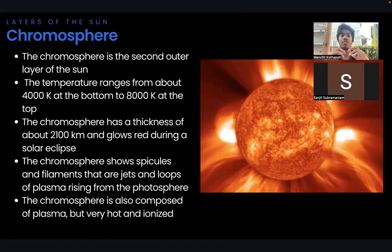The chromosphere has a thickness of about 2,100 kilometers and glows red during a solar eclipse. The chromosphere shows spicules and filaments that are jets and loops of plasma rising from the photosphere. The chromosphere is also composed of plasma but very hot and ionized. We'll be talking about filaments and spicules later in the video.